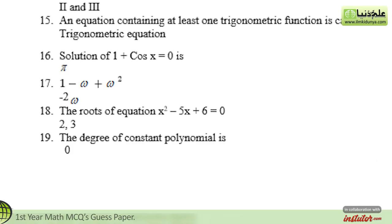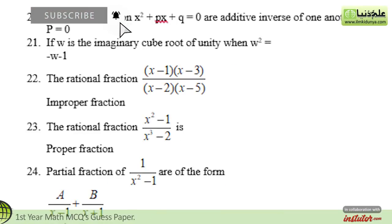The fifteenth statement is: an equation containing at least one trigonometric function is called — the correct option is a trigonometric equation. The sixteenth statement is: the solution of 1 plus cos θ equals 0 is — the correct option is π. The seventeenth statement is: 1 minus ω plus ω² equals — the correct option is −2ω. The eighteenth statement is: the roots of equation x² minus 5x plus 6 equals 0 are — the correct option is 2 and 3.